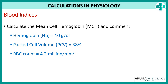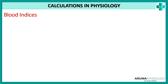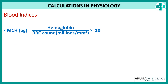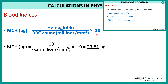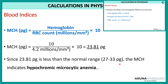The next question asks to calculate the MCH. All three values are given. MCH is hemoglobin divided by RBC count, multiplied by 10. Substituting the values gives 23.81 picograms. The normal range is 27 to 33 picograms, so in this case it is hypochromic — specifically hypochromic microcytic anemia.